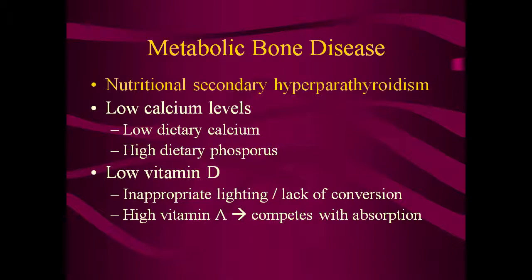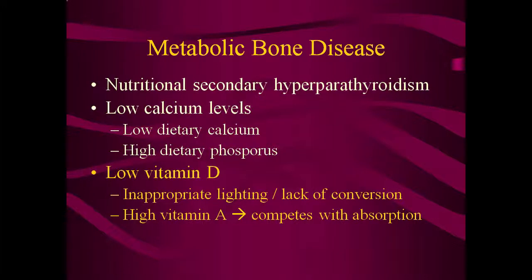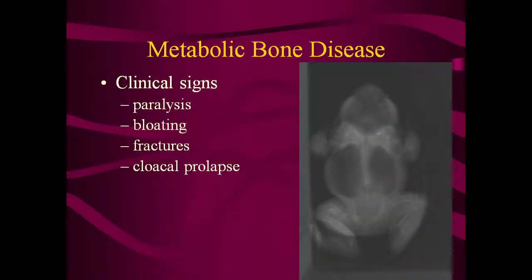The most commonly seen nutritional disorder is metabolic bone disease, or nutritional secondary hyperparathyroidism. The disorder stems from a problem with either calcium or vitamin D metabolism. Low body calcium levels can result from either low dietary calcium or high dietary phosphorus levels. A vitamin D deficiency can stem from inappropriate lighting causing inadequate conversion of vitamin D, or from too much vitamin A in the diet which will interfere with the absorption of vitamin D. Clinical signs of this syndrome may include tetanic or flaccid paralysis particularly after excitement or exercise, bloating from impaired GI motility, fractures or bending deformities of the jaw or long bones, or cloacal prolapse.